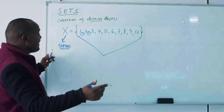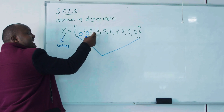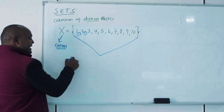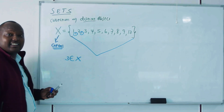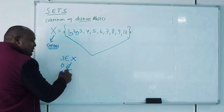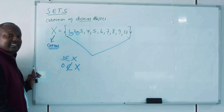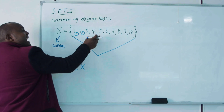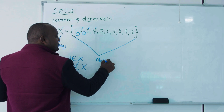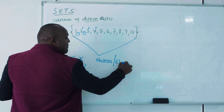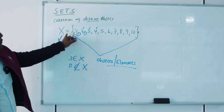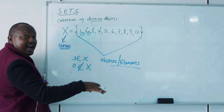If you want to show that v is a member of set X, you write v ∈ X, meaning v is a member of X. Conversely, zero is not a member of X. The individual items inside a set are called elements or objects — you may also hear them referred to as members. So v is a member of this set, while zero is not a member of this set.